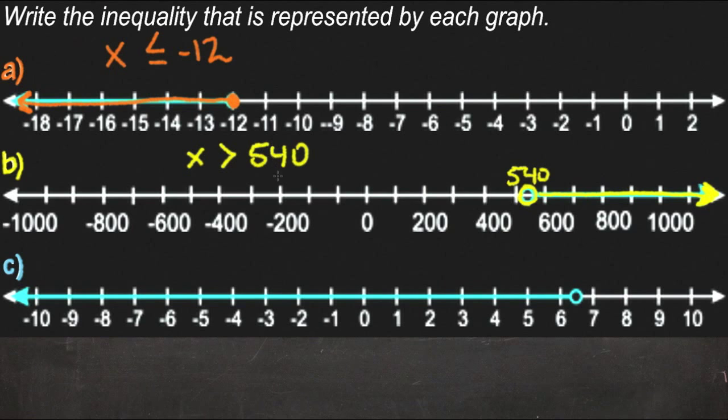And then for C, or for part C here, we have at 6 and a half. Again, we have an open circle, so it doesn't actually include 6 and a half, but then we have everything smaller than 6 and a half. So x can't be 6 and a half, but it can be anything littler or smaller or more negative than 6.5.